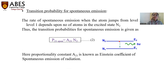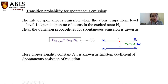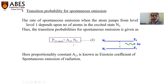Now, to find the transition probability for spontaneous emission: in spontaneous emission, there is no incident photon at the E2 level. The transition probability for spontaneous emission is proportional to only N2. If we remove the proportionality symbol, it will be P21(spontaneous) = A21 × N2, where A21 is the Einstein coefficient for spontaneous emission, giving the rate of spontaneous emission.